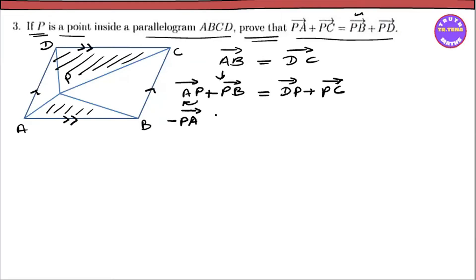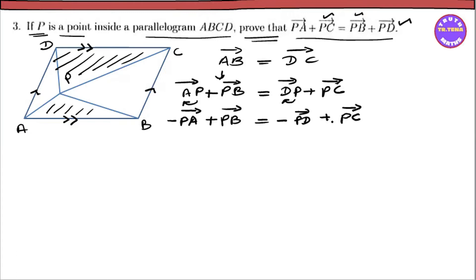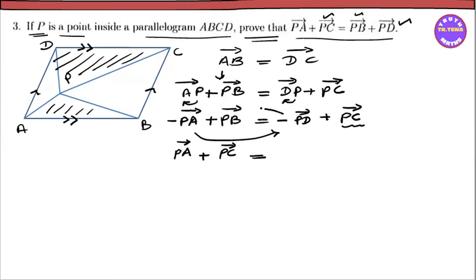PB is equal to DP. DP is equal to PD — those are the two iterations. The same is negative BD vector. The BD vector equals BD vector. If you have BD vector, we can see BD vector that is PD vector.